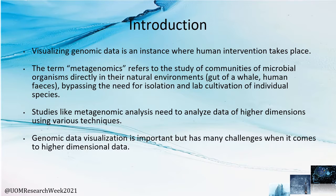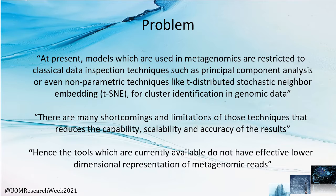Both genomics and metagenomics are inherently plagued by the curse of high dimensionality, which poses a challenge in analyzing and visualizing this data. At present, models used in metagenomics for class identification are limited to classical data inspection techniques like principal component analysis (PCA) and T-distributed stochastic neighbor embedding (T-SNE). These methods have inherent shortcomings and limitations that reduce capability, scalability and accuracy of visualizations, and there are not many visualization tools available for metagenomic datasets.